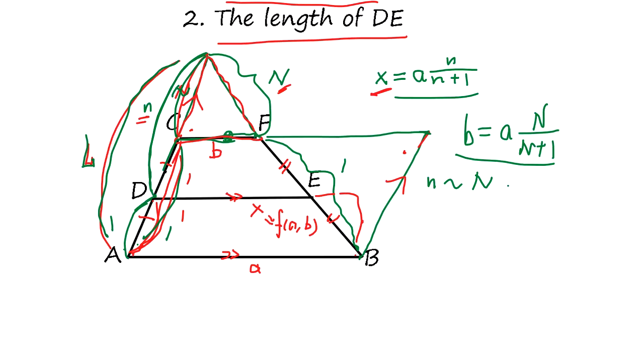But this length is going to be n plus one over l. And we twice that, which equals n plus one over l. So n equals 2n plus one over l. So n equals 2n plus one.